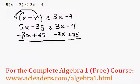So 5x minus 3x, 2x. The negative 35 plus 35 cancel out. 3x minus 3x cancel out. Negative 4 plus 35 is 31.